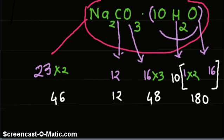So the contribution of sodium is 46, carbon 12, oxygen is 48, and since there are 10 molecules of water, we have 10 outside. So multiplied by 18, we get 180 as the contribution to the mass by the water component.